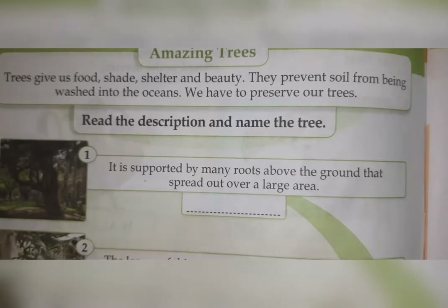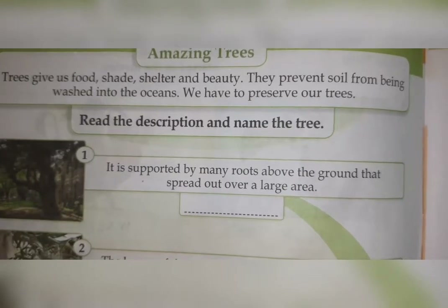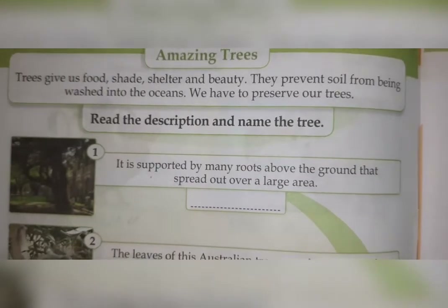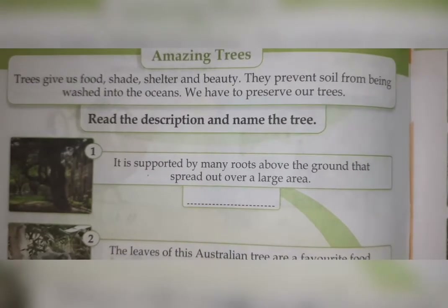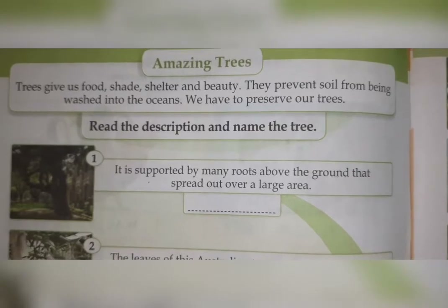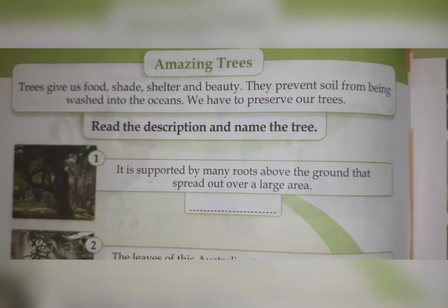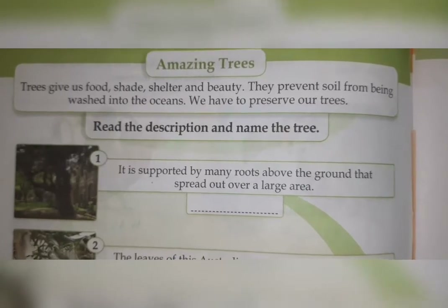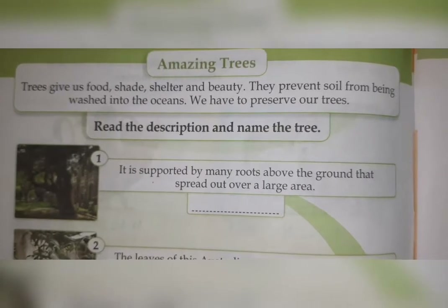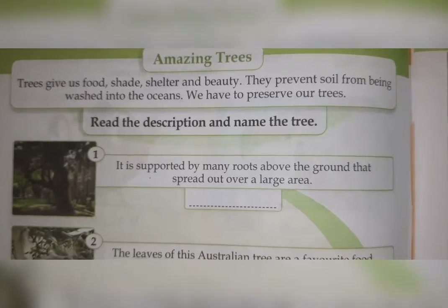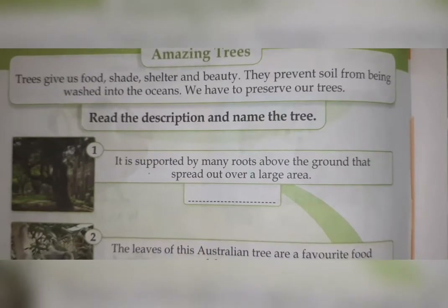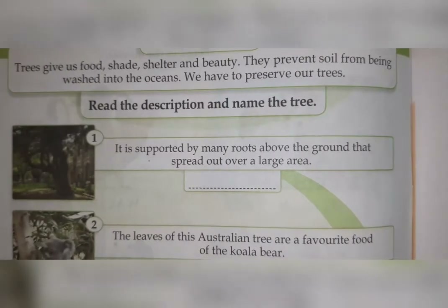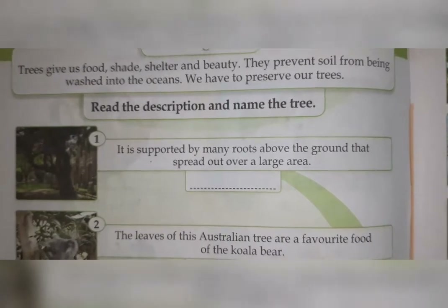Trees prevent soil from being washed away because roots hold the soil when it rains, so the soil will not wash away. We have to preserve trees. Trees also give us oxygen, which is very helpful to us. Now, some descriptions are given and we have to find out the names of these trees.